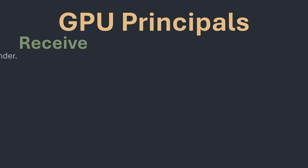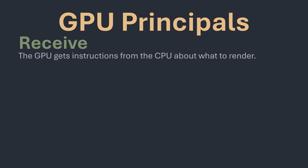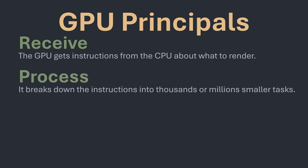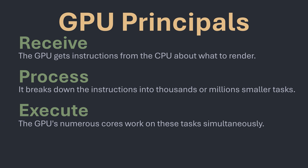How does a GPU actually work? At its core, a GPU operates on the principle of massive parallelization. It does this by following four common steps. It will first receive the data it needs from the CPU of what it currently needs to work on. It will then process this data, breaking down the instructions into thousands or millions of similar smaller tasks. The GPU will then execute these, spreading all these small numerous tasks across the potentially thousands of cores that the device has to work on them simultaneously.